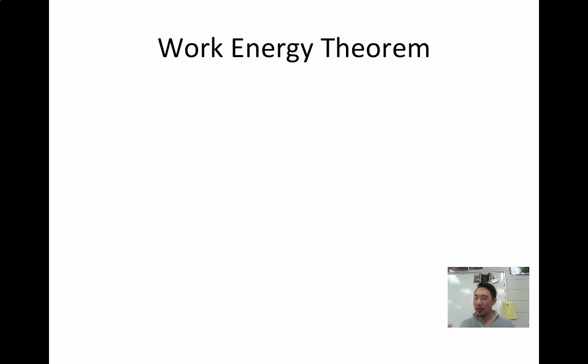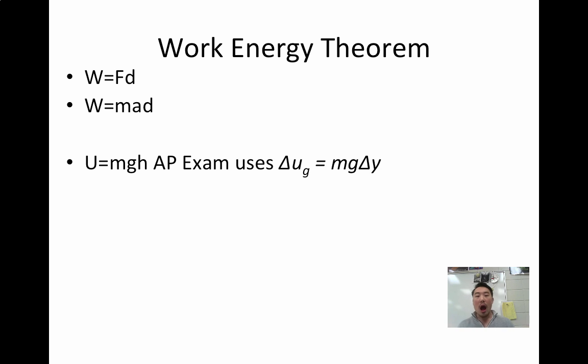Now, I just mentioned the work energy theorem. So let's take a look at how this all ties in. So the equation for work is force times the distance. And we can break that up because we know that force is equal to the mass times the acceleration. So work is equal to mass times the acceleration times the distance that is traveling. The equation for potential energy is mass times the acceleration due to gravity times the height.